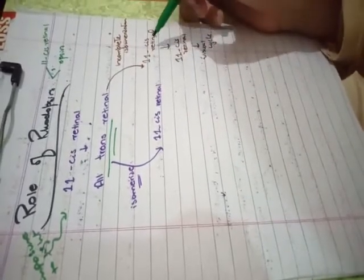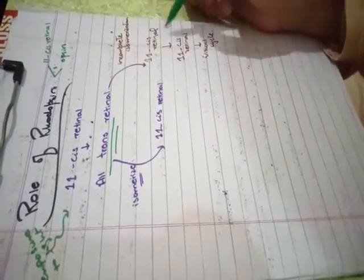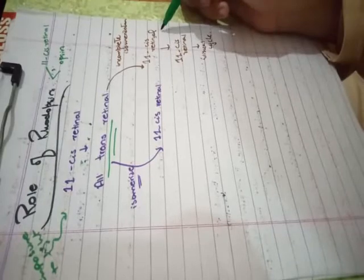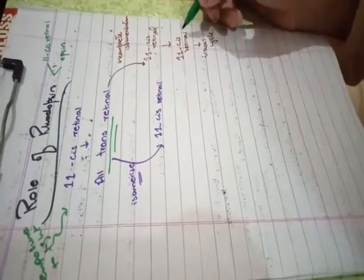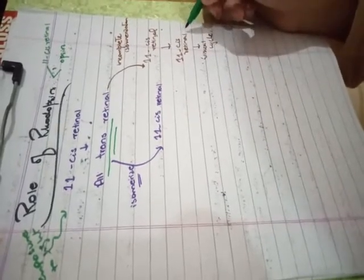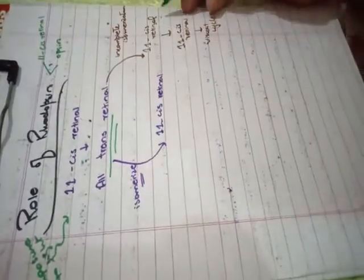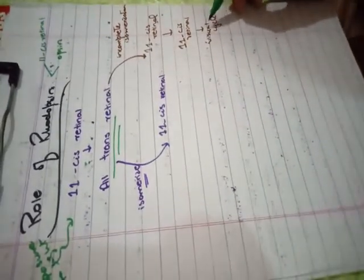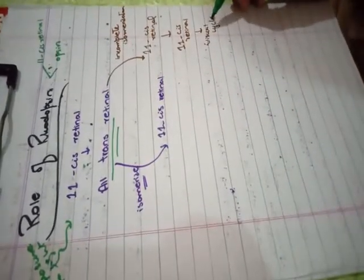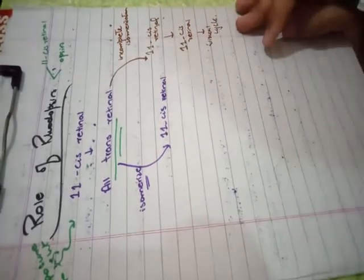The all-trans retinol is isomerized back to 11-cis retinol, which is then converted to 11-cis retinal. The 11-cis retinal recombines with opsin, completing the visual cycle.